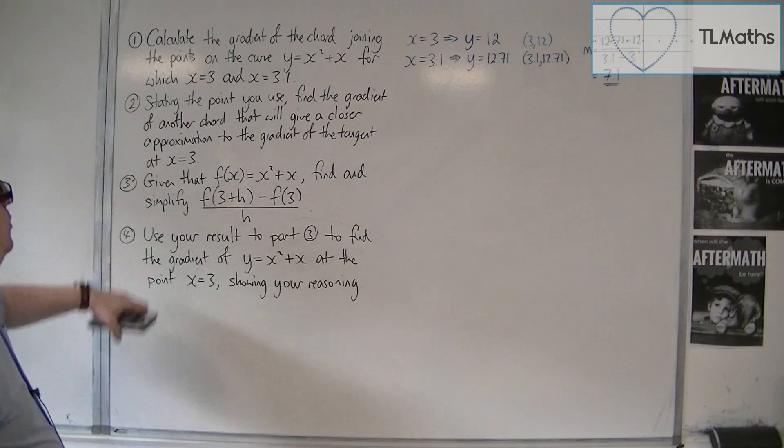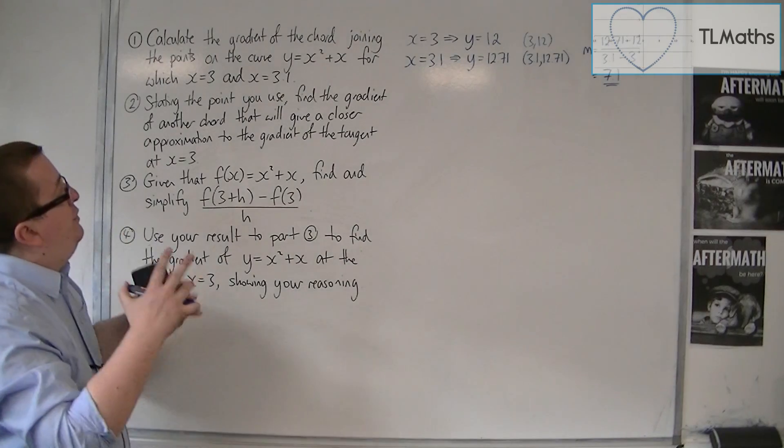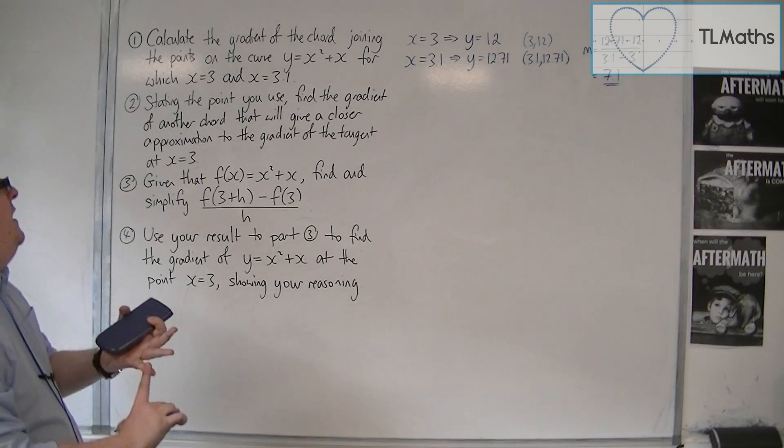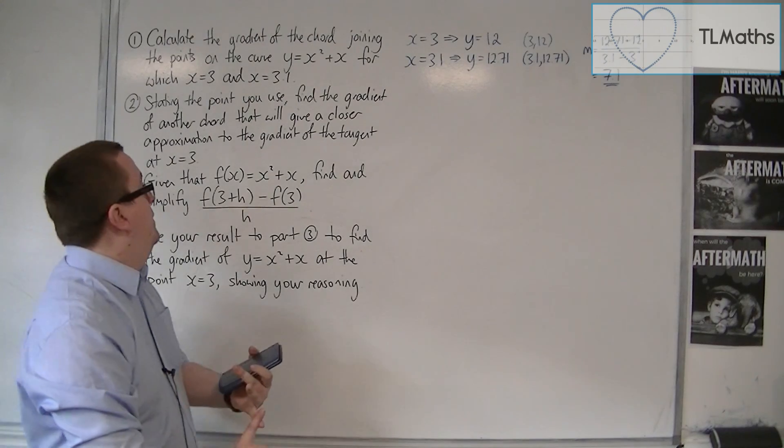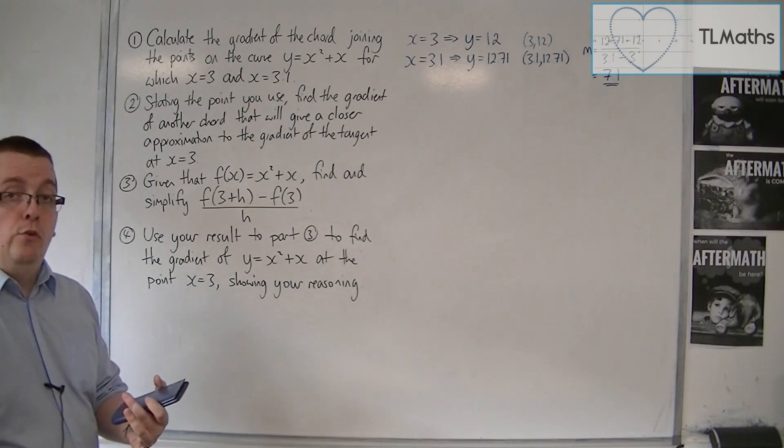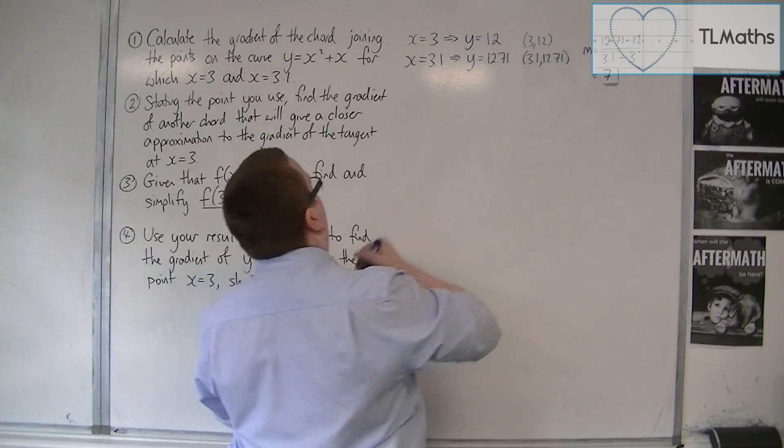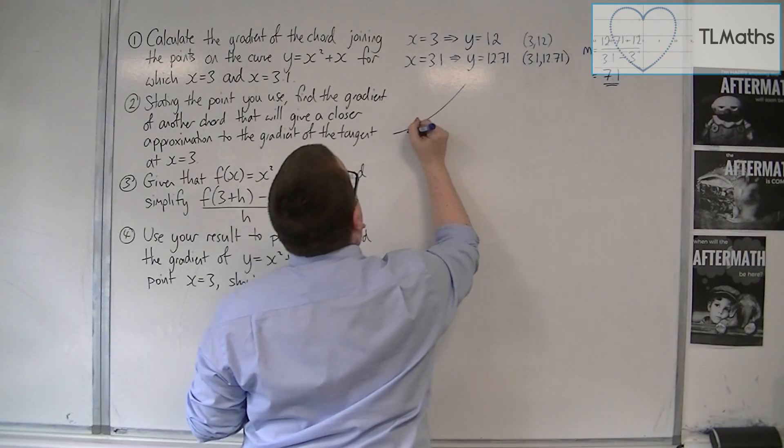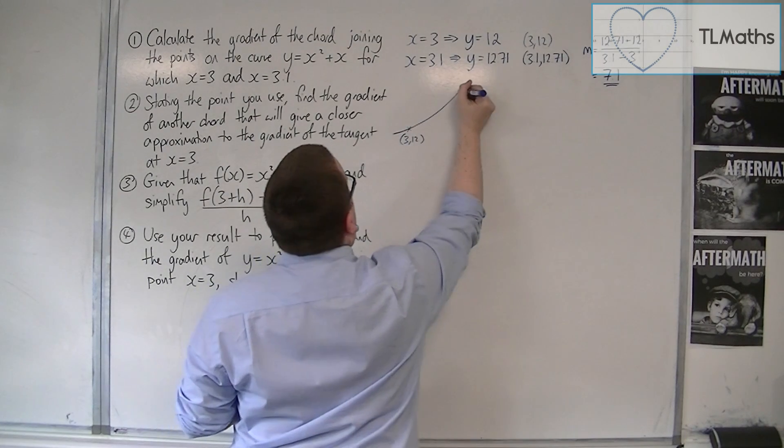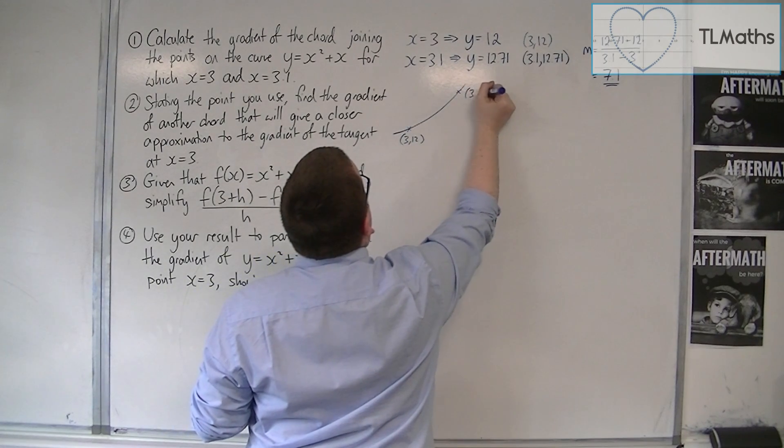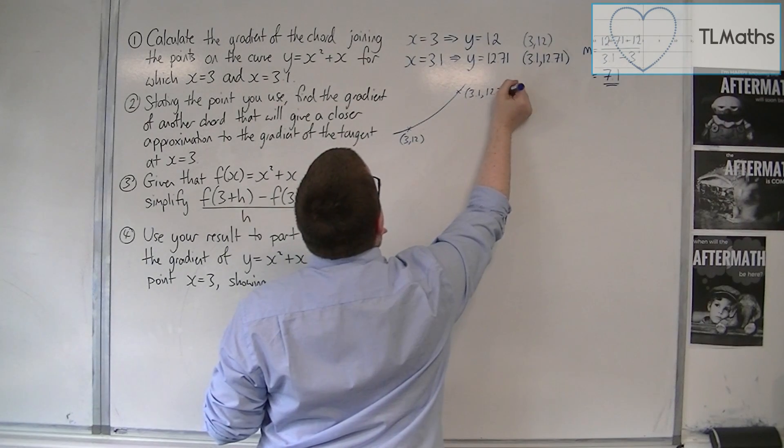Now for part two: stating the point you use, find the gradient of another chord that will give a closer approximation to the gradient of the tangent at x equals 3. So currently what we have, we have these two points: we've got 3, 12, and we've got this other point, 3.1, 12.71.